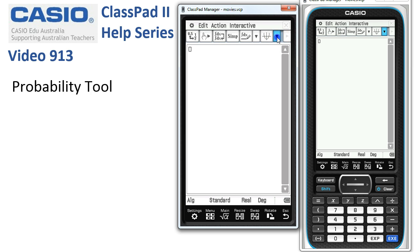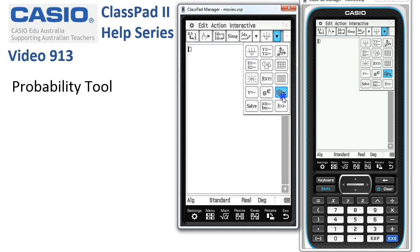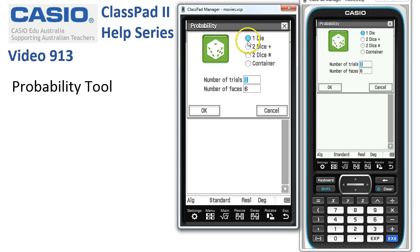If we tap onto this drop-down box here, we're after this icon over here, the dice with a percentage. And by default it's set up to throw one dice with six faces and it's going to throw it once.